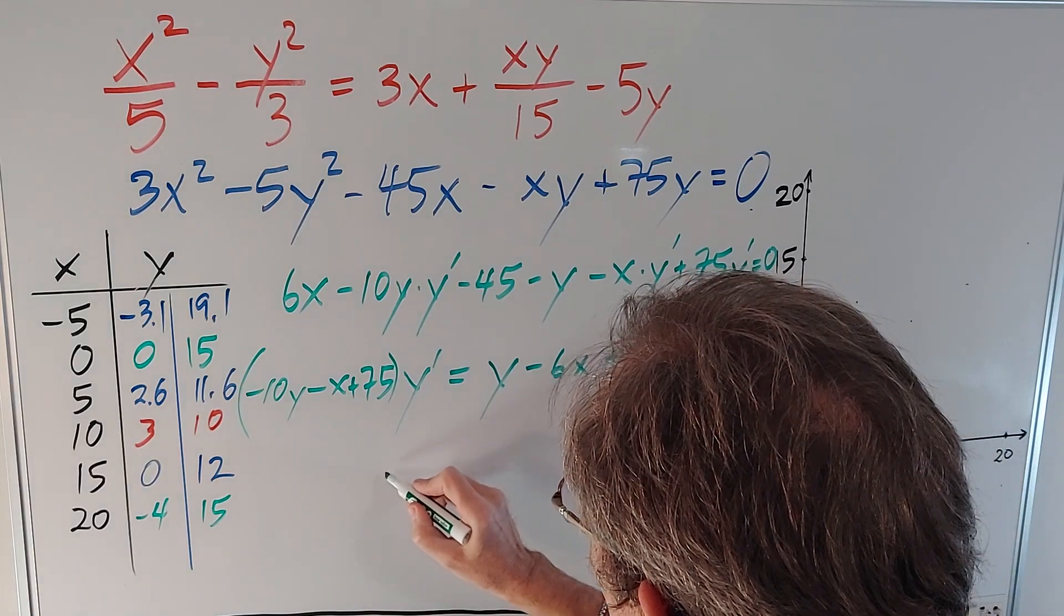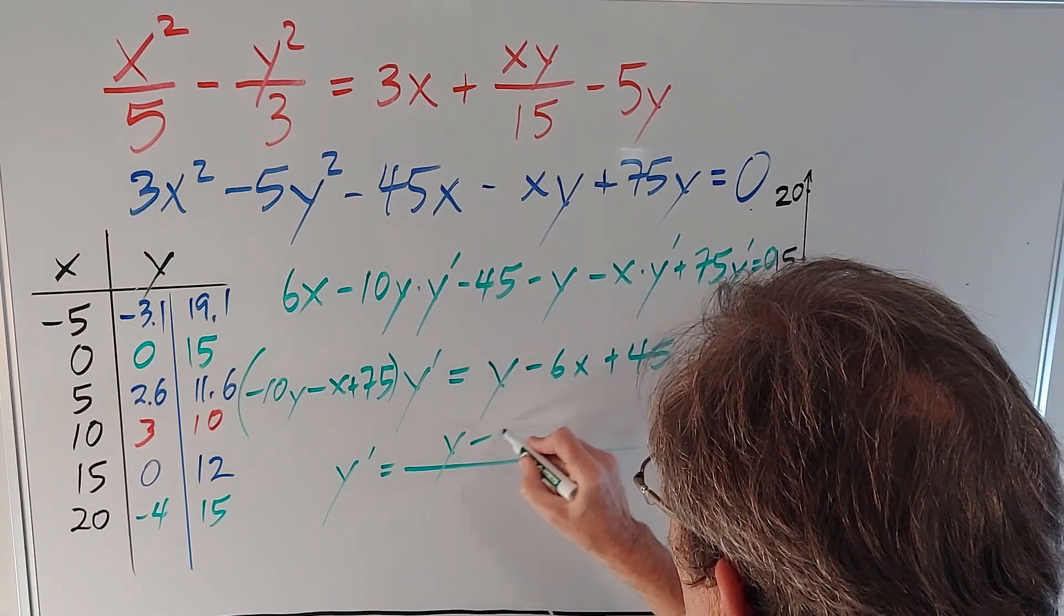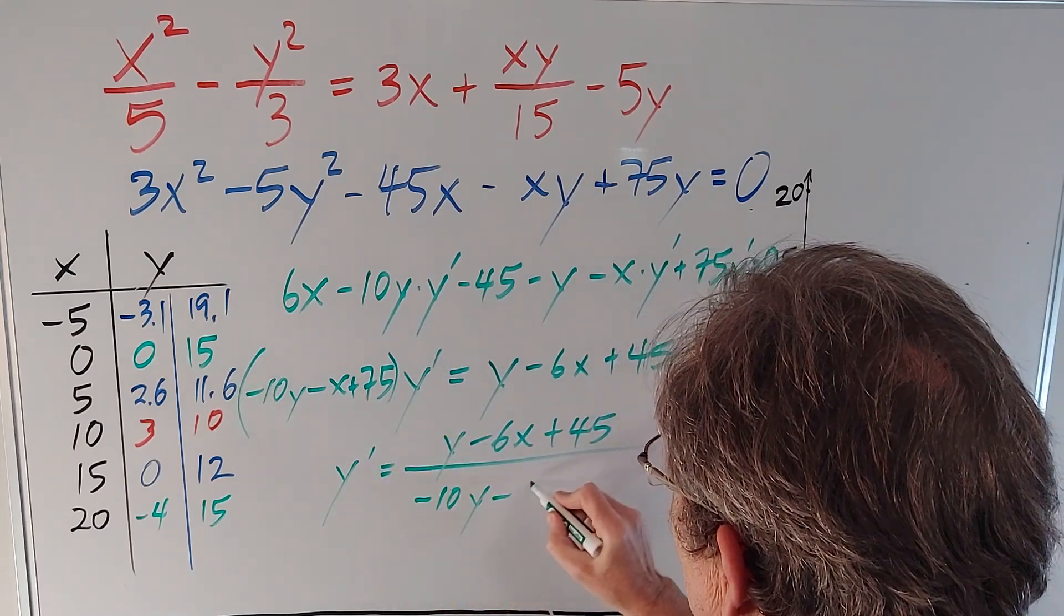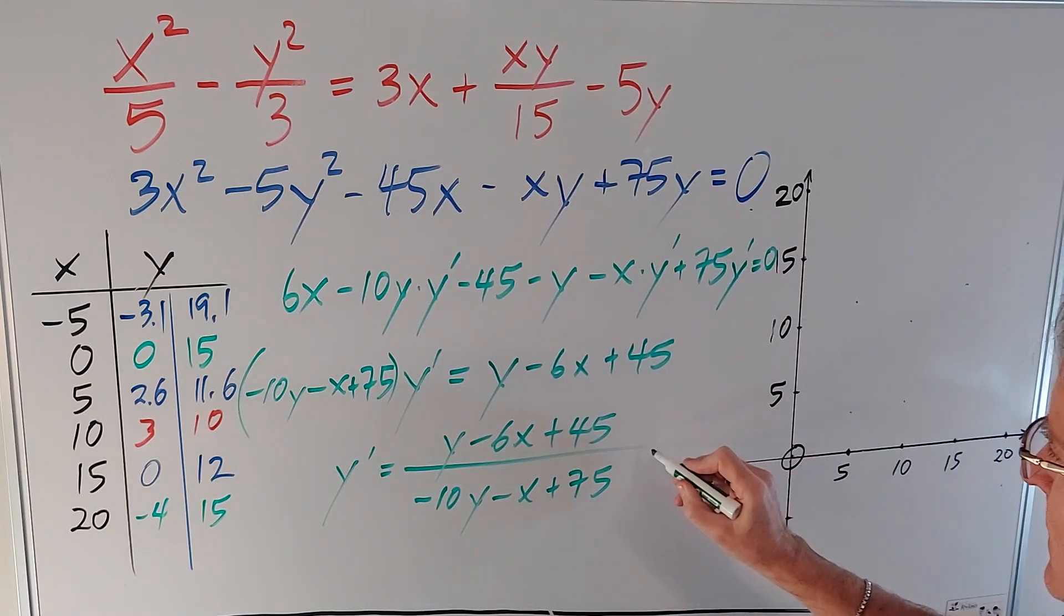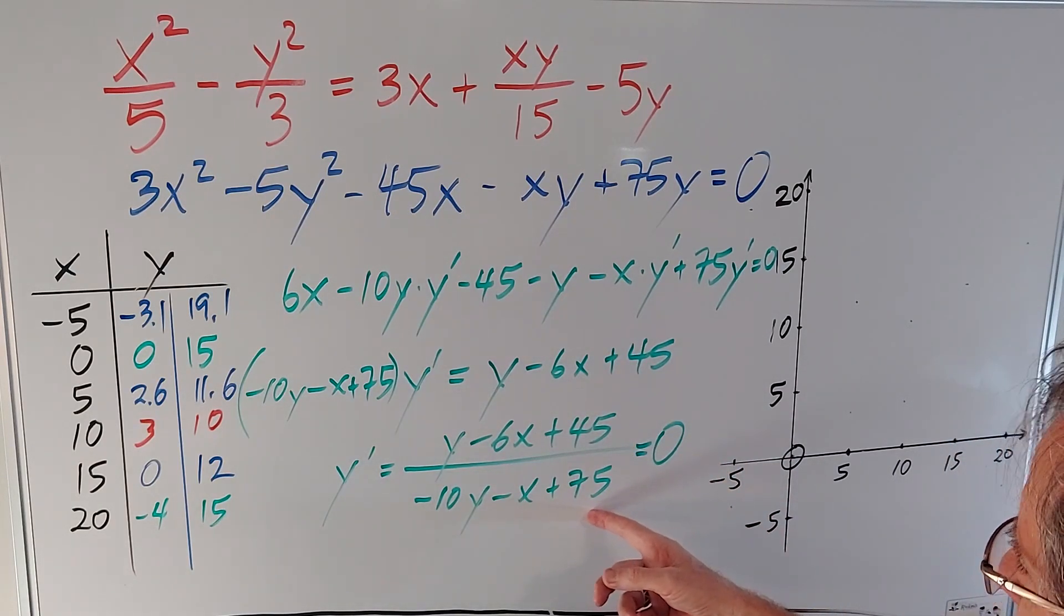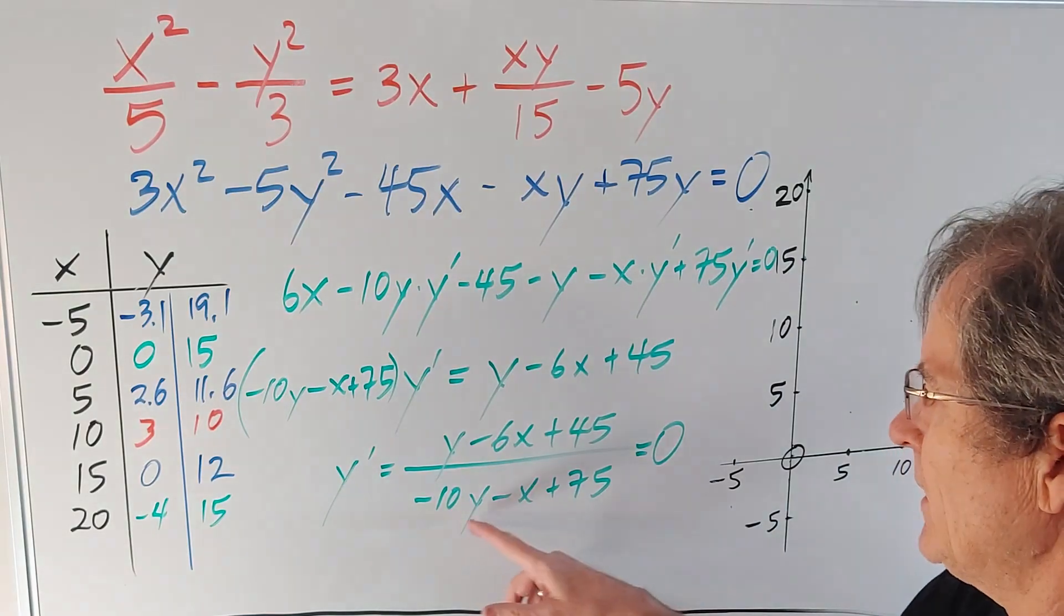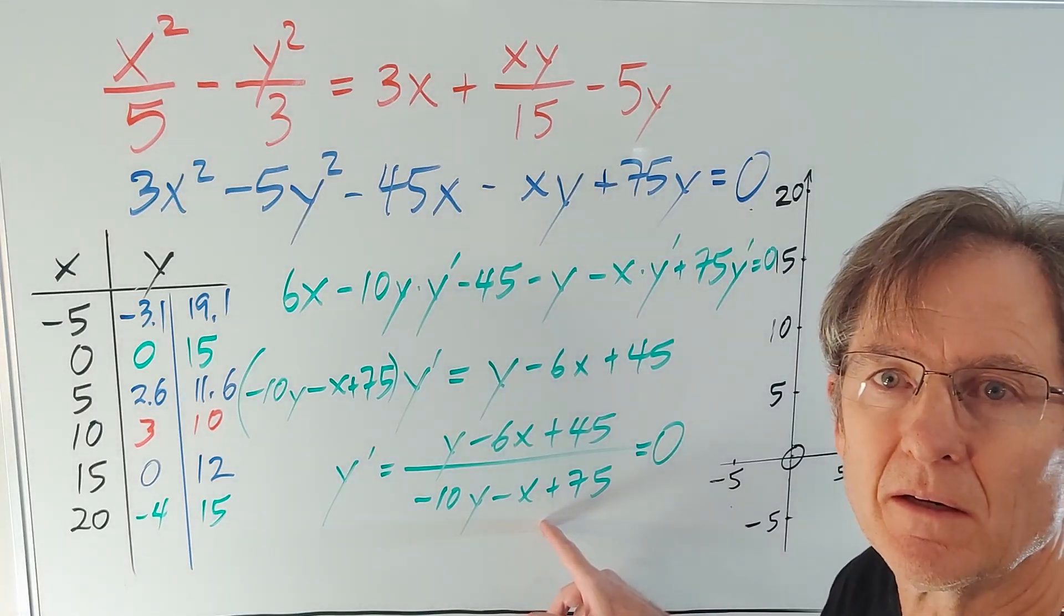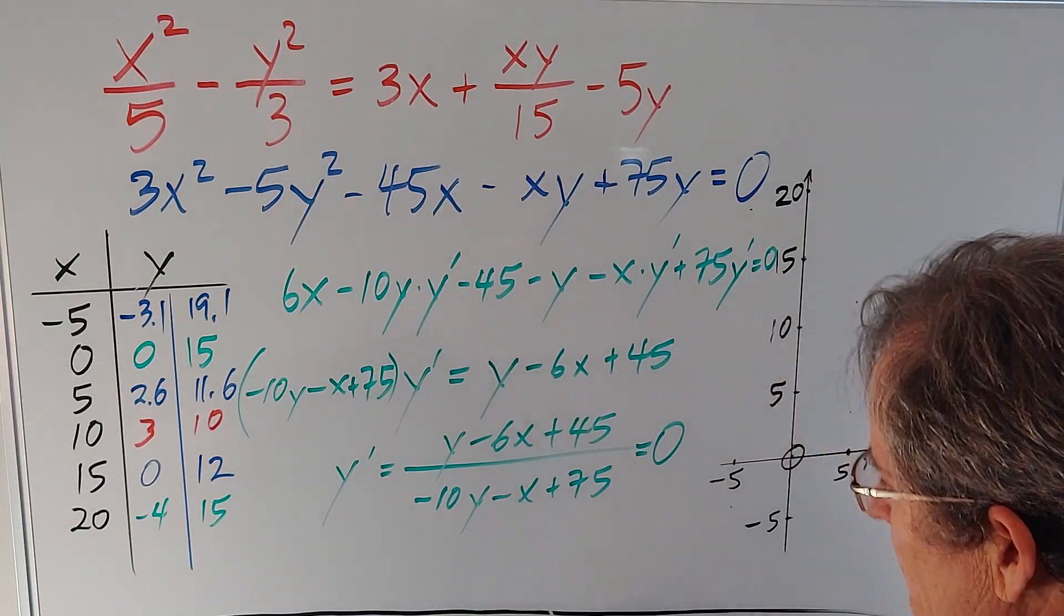So the slope at any point on the curve is given by this divided by that. Now, at the maximum and minimum points, this has to be big fat zero. So what in this fraction can make it zero? Well, the denominator can't, unless you're dividing by infinity. That's not a real number. So the denominator cannot make it zero.